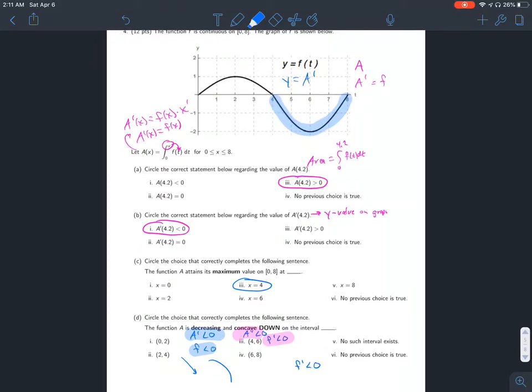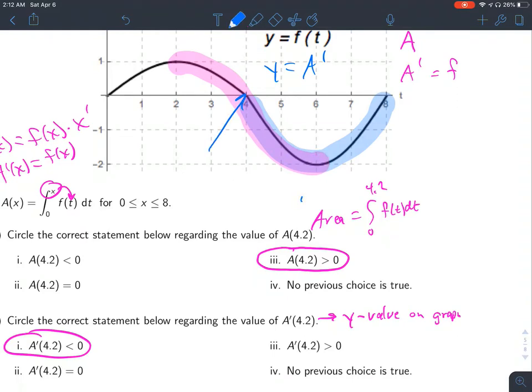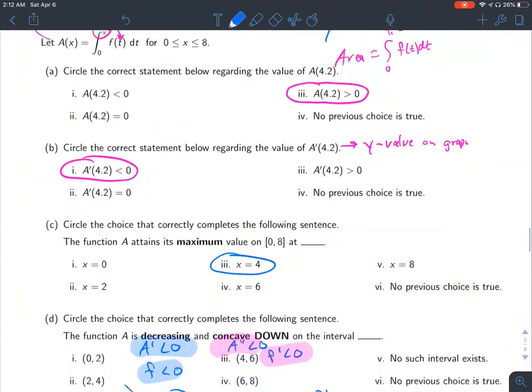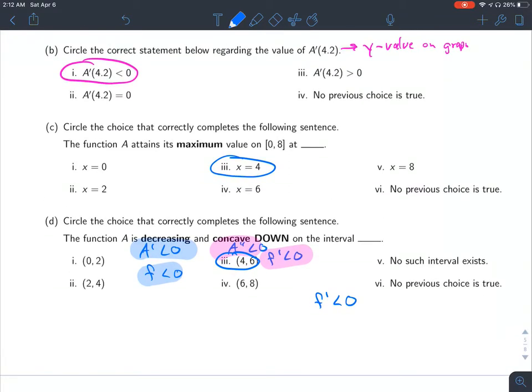When is f, when is A double prime less than 0? That means when is this curve going down from left to right? What's going down from left to right? Here to here. The overlap of those answers is going from 4 to 6. So I would say answer 3 is the correct one. That's when this original function that we don't see graphed is decreasing and concave down.